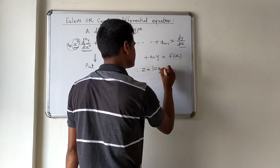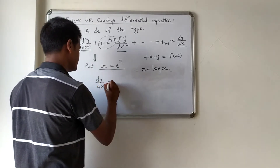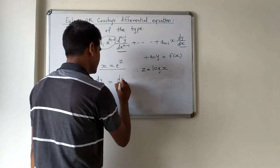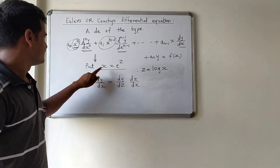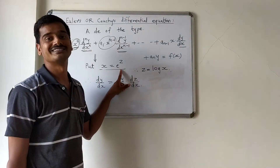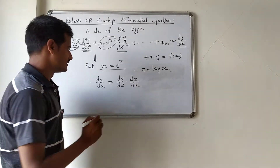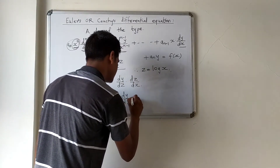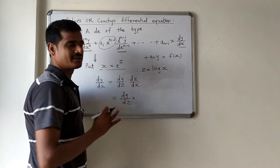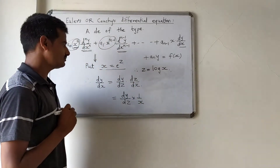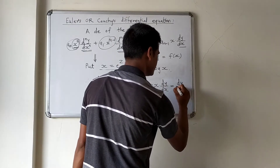Since z = log x, we write dy/dx as (dy/dz)(dz/dx). We have changed the independent variable from x to z. Now dz/dx = 1/x because z = log x. Therefore, dy/dx = (1/x)(dy/dz), which implies x(dy/dx) = dy/dz. Let capital D denote d/dz. So x(dy/dx) = Dy.